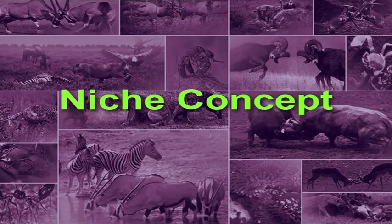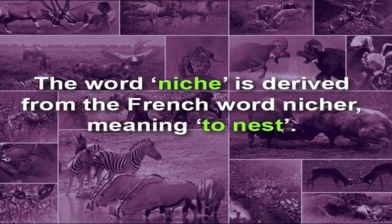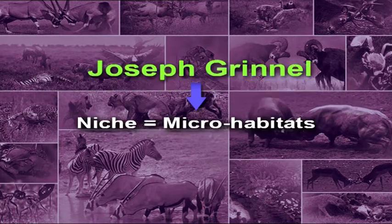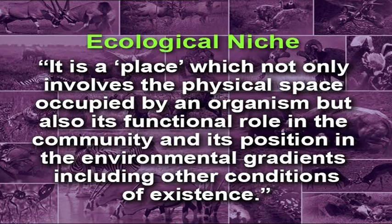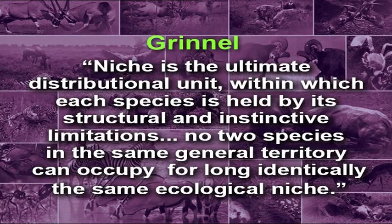The word niche is derived from the French word meaning 'to nest.' The term niche was first coined by Joseph Grinnell in 1917 to explain micro-habitats. The general meaning of ecological niche is a place which involves not only the physical space occupied by an organism, but also its functional role in the community and its position in environmental gradients. According to Grinnell, niche is the ultimate distributional unit within which each species is held by its structural and instinctive limitations, and no two species in the same territory can occupy for long the same ecological niche.